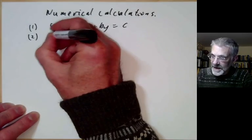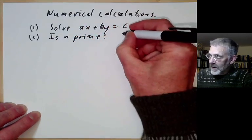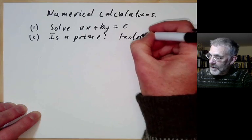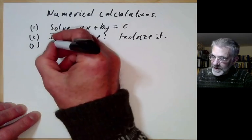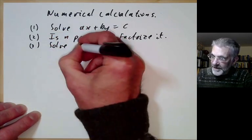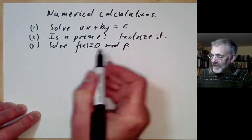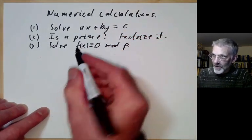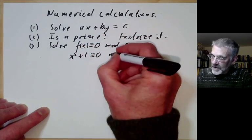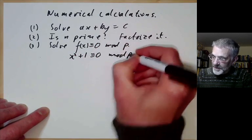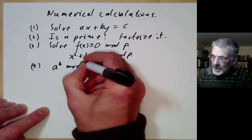Another problem we might have is: is N prime? And if it's not prime, we might want to factorise it. Thirdly, we want to solve F(X) congruent to 0 modulo P for some prime P, where F(X) is a polynomial — for instance, we might want to solve X squared plus 1 congruent to 0 modulo P. Or fourthly, we might want to work out what is A to the B modulo N.